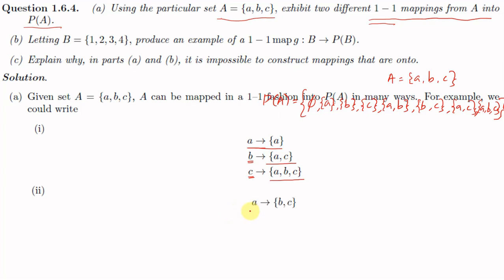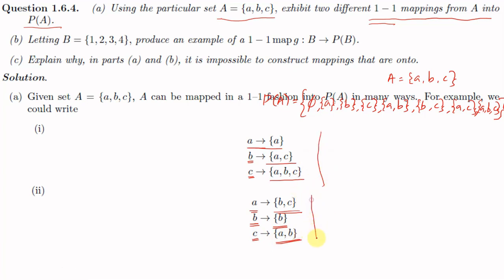A second one-one mapping is: a maps to {b,c}, b maps to {b}, and c maps to {a,b}. Here also every element in A has a different image in P(A), confirming this is a one-one mapping.